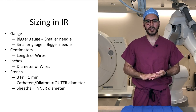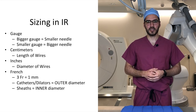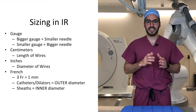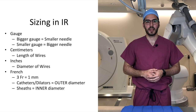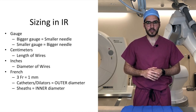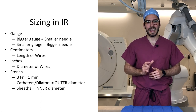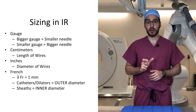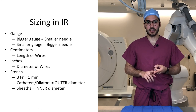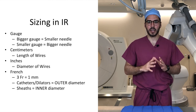To wrap this video up, here are the major take-home points. There are 4 units of measure in IR: gauge, centimeters, inches, and French. Gauge describes the diameter of needles — the bigger the gauge, the smaller the needle; the smaller the gauge, the bigger the needle. Centimeters describes the length of wires, and a standard length wire is 180 centimeters. Inches describes the diameter of wires, and they come in one hundredths of an inch. French describes the outer diameter of dilators and catheters, and the inner diameter of sheaths. And 3 French equals 1 millimeter.